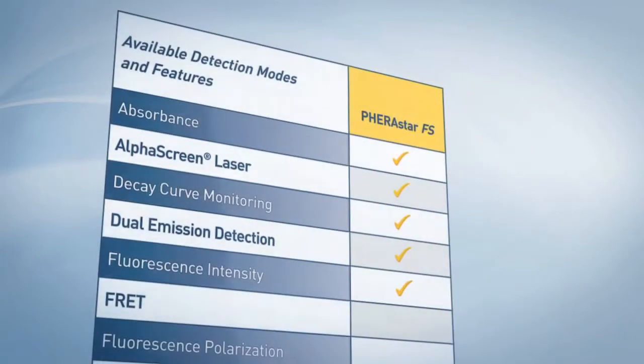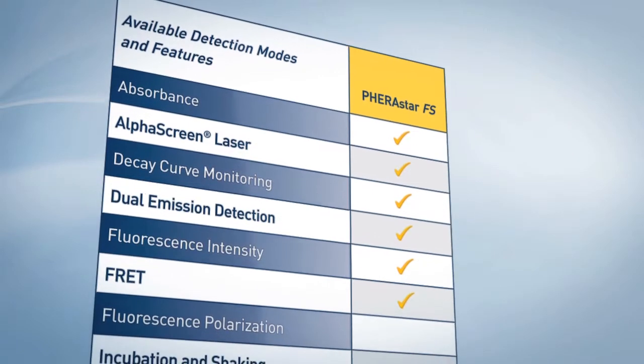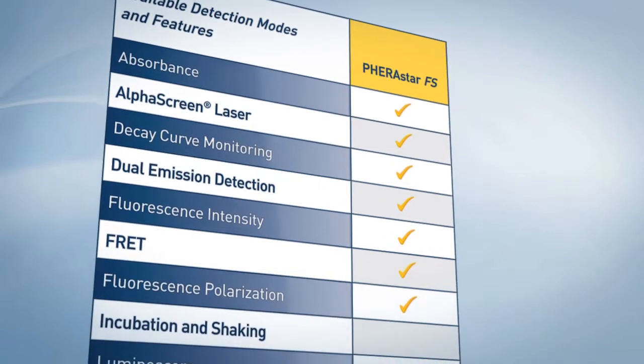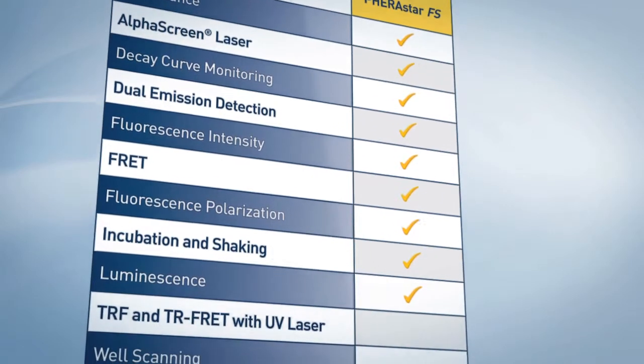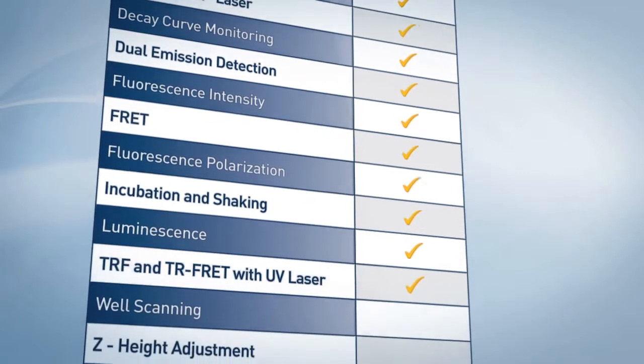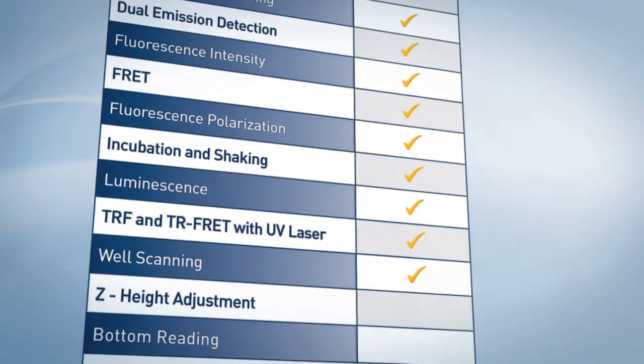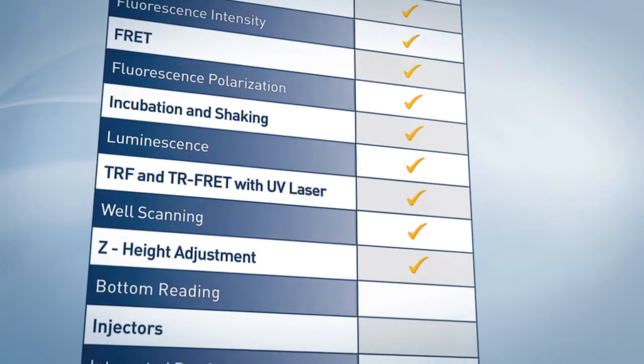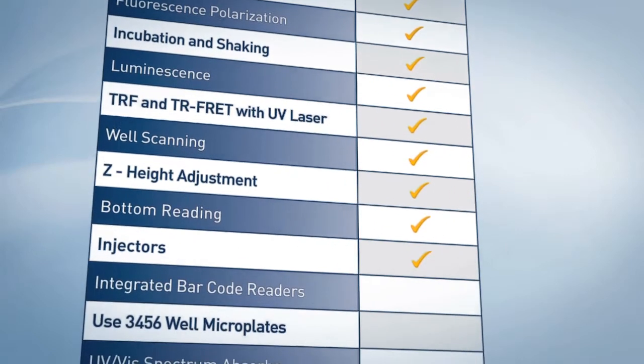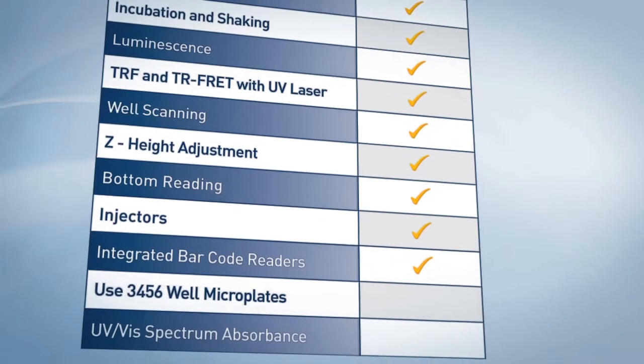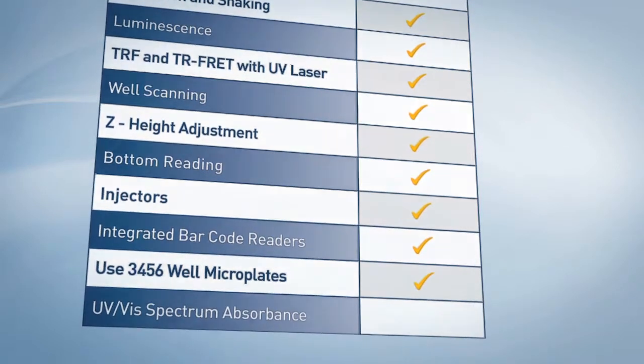When a lab requires speed, the Ferristar FS is the fastest reader available. If a method demands sensitivity or detection of low volumes, no other microplate reader performs better. The Ferristar FS sets the performance bar for advanced detection methods like TR FRET, alpha screen, and cell-based assays with no compromises for other detection modes.